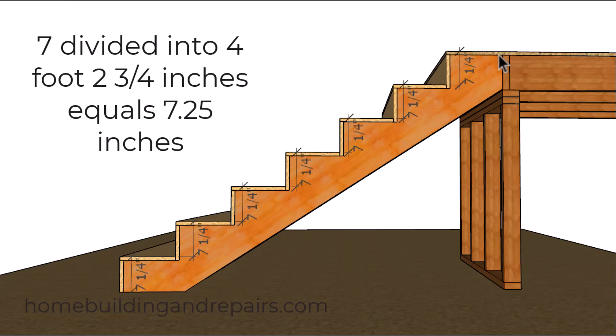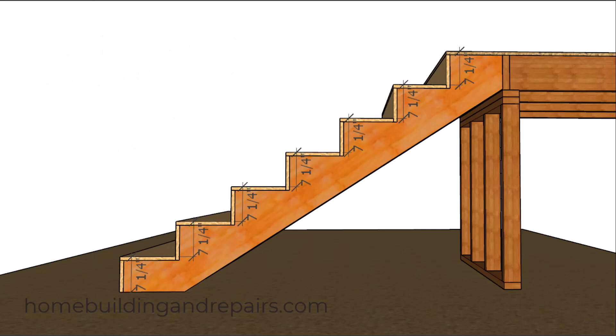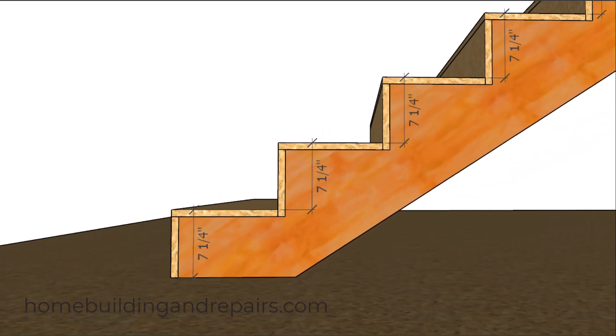In this video, the upper deck sheathing and the stair tread materials will be the exact same thickness. And that thickness in this example is three quarters of an inch.